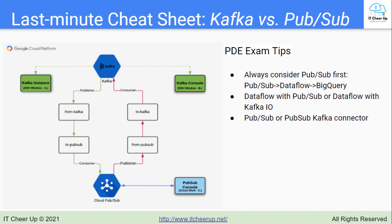I've also highlighted exam tips for answering questions on Kafka and PubSub. Number one: always consider PubSub first for your answer. The typical messaging and data analysis pipeline is PubSub to Dataflow to BigQuery. As mentioned in the Dataflow vs. Dataproc video, Dataproc does not natively connect to PubSub. If the question requires quickly lifting and shifting from on-premises to Google Cloud, or reusing Kafka features such as Kafka mirroring or random offset access, then use Kafka or a PubSub Kafka connector between on-premises and cloud, or work with Dataflow with Kafka for data processing.